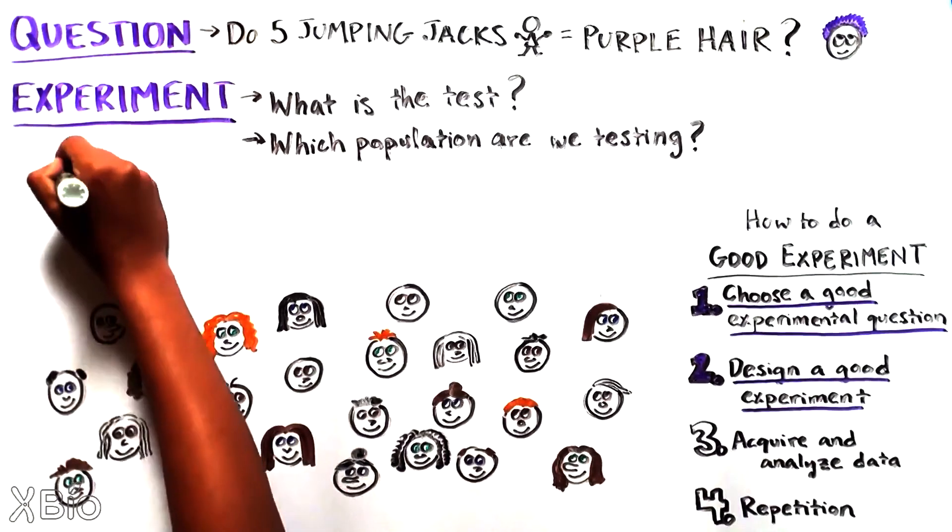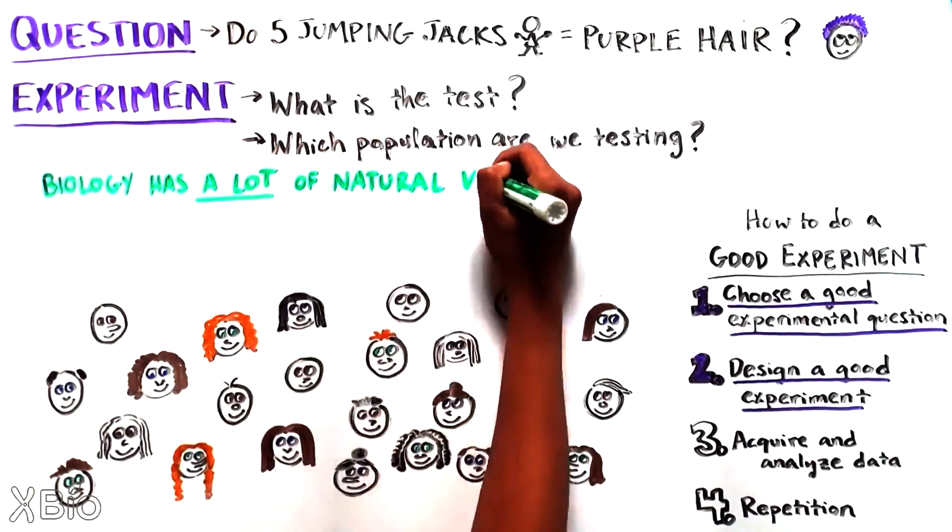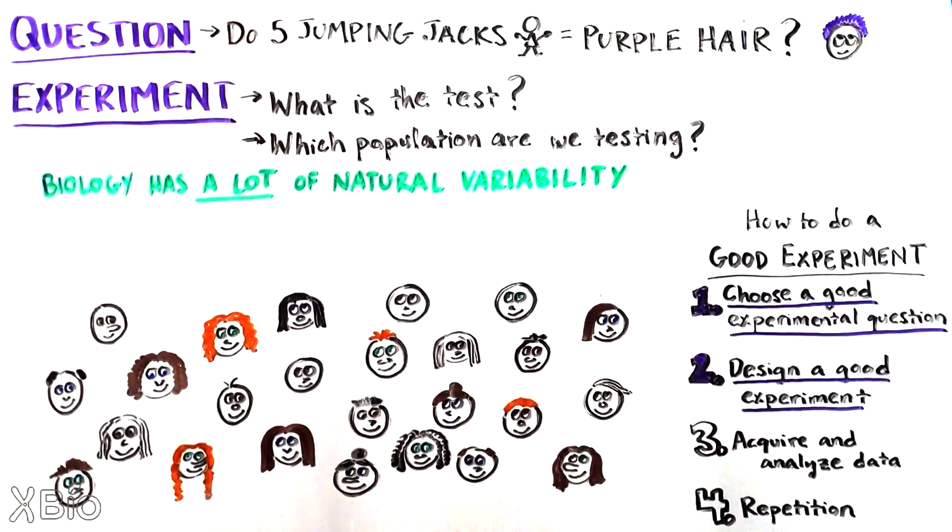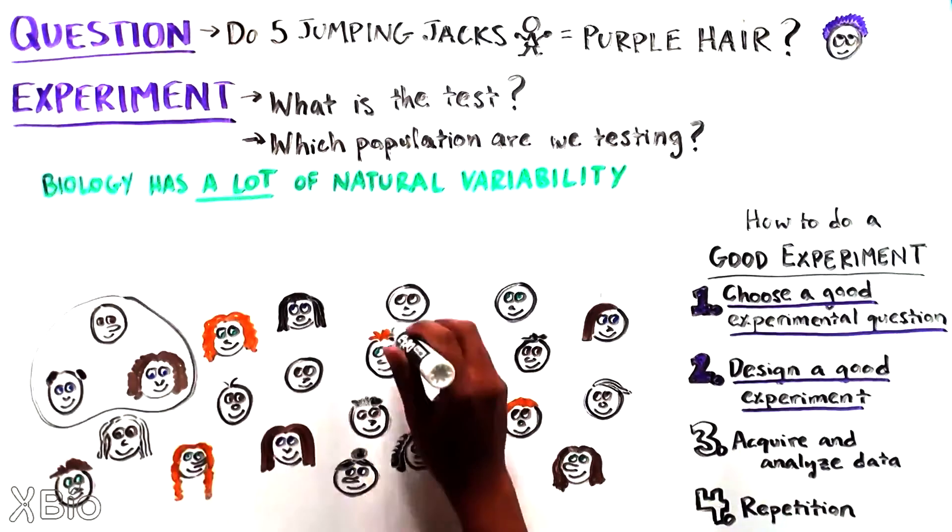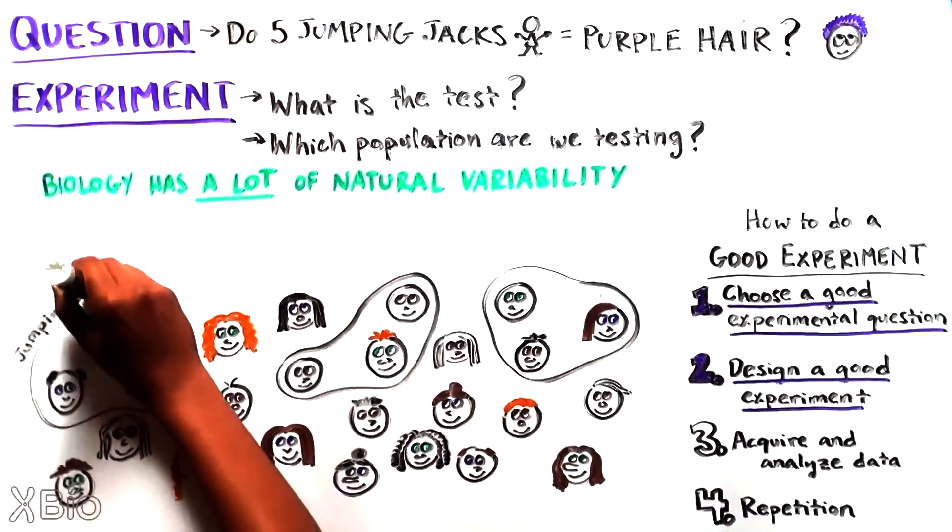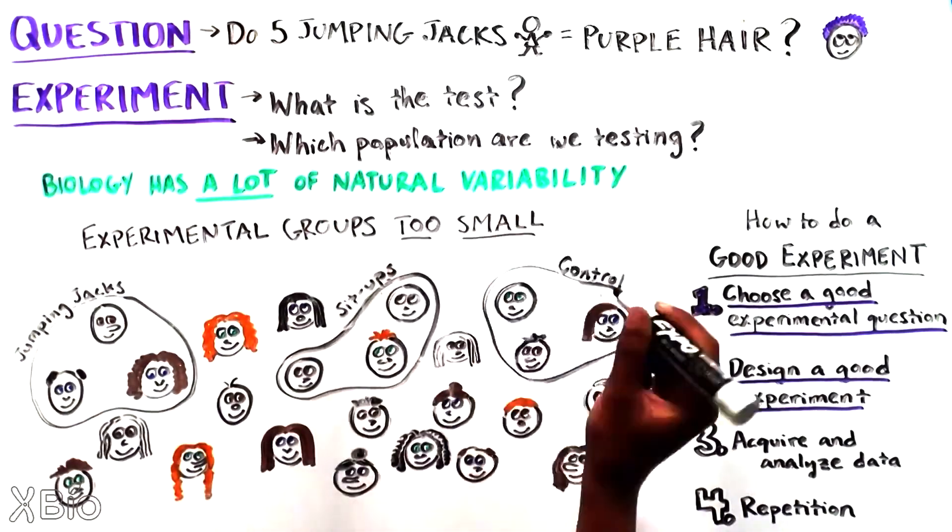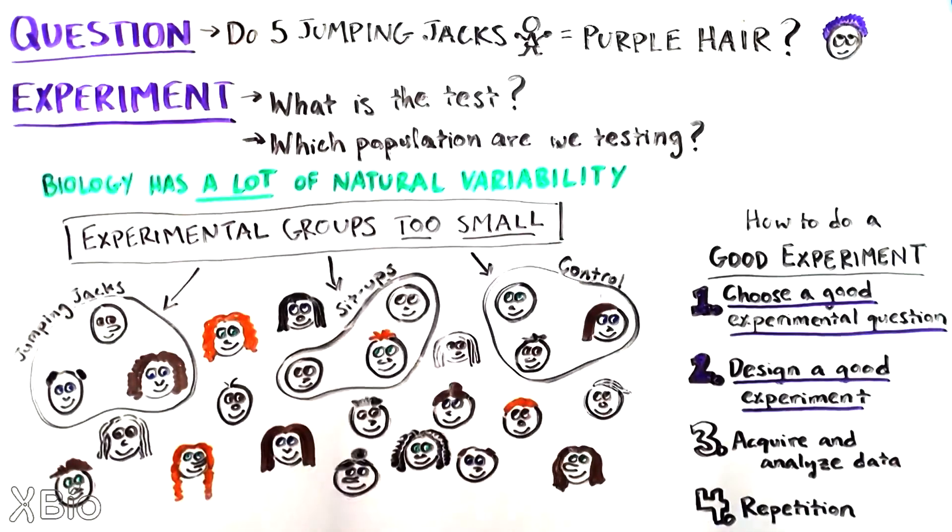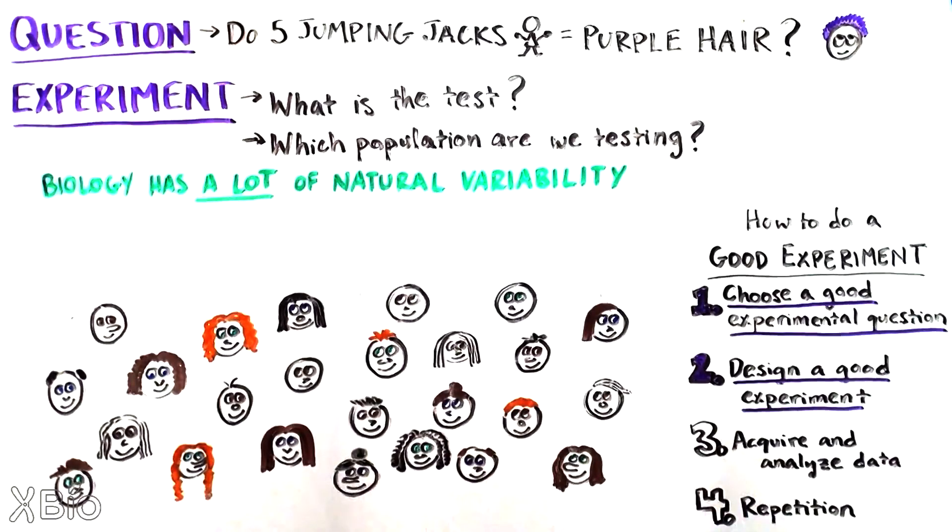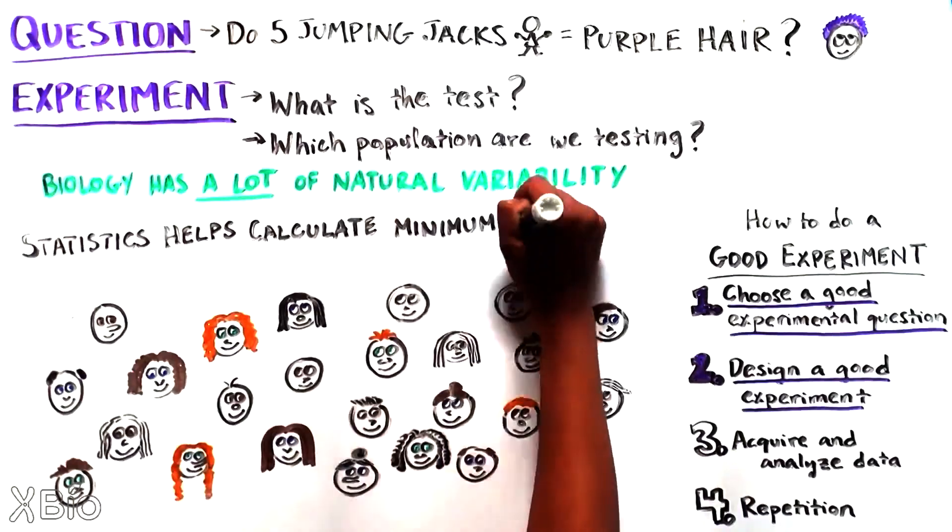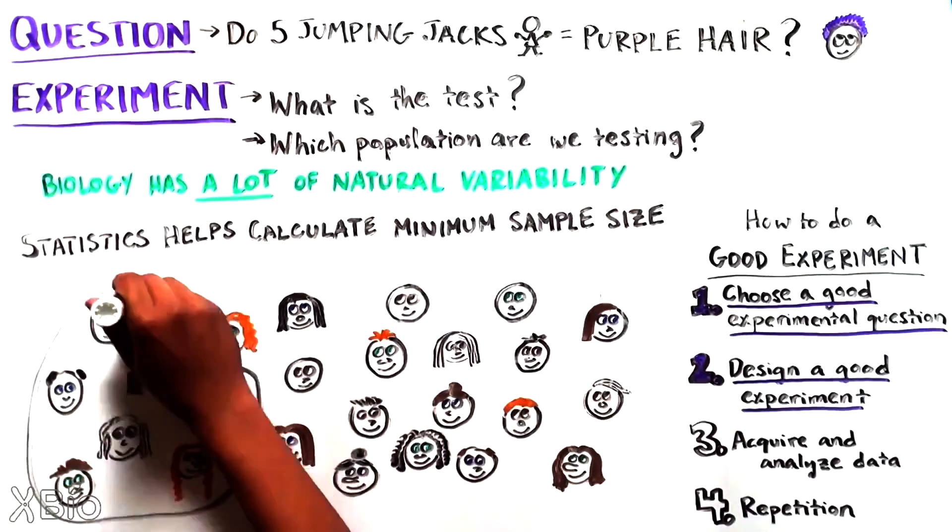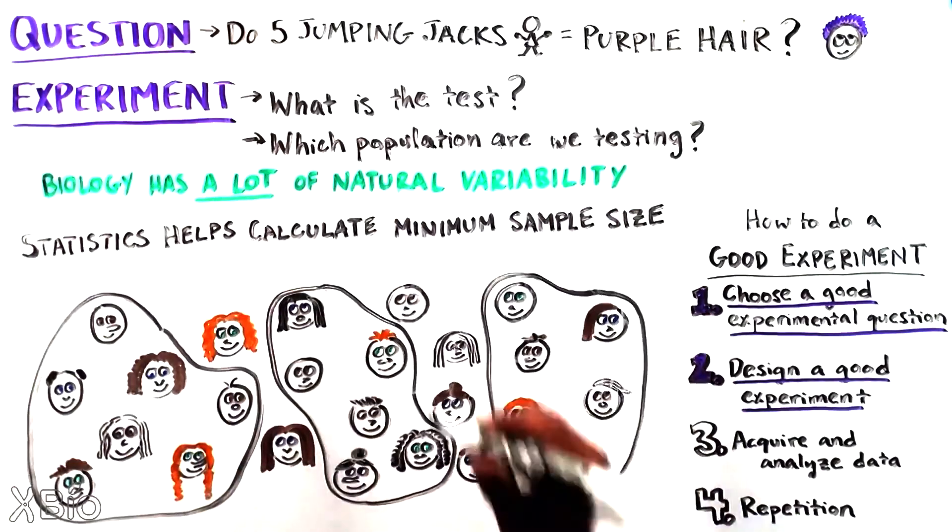One problem is that in biology, there's a lot of natural variability. If the experiment is not large enough, for example, three people in each group, there is a high likelihood that the wrong conclusions will be drawn because our experimental groups may not properly represent the whole population. Statistics can help by giving us tools to calculate the minimum size that our sample should be. This can often be hundreds of people.